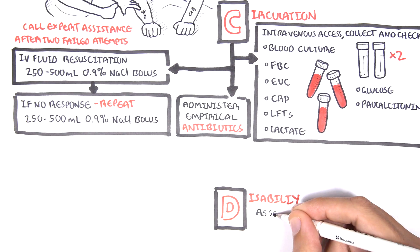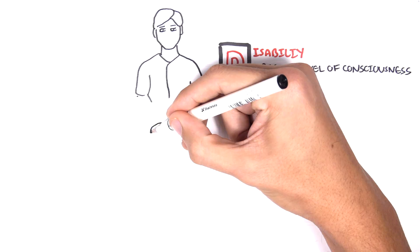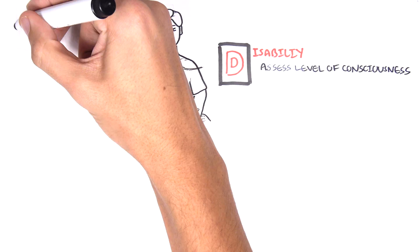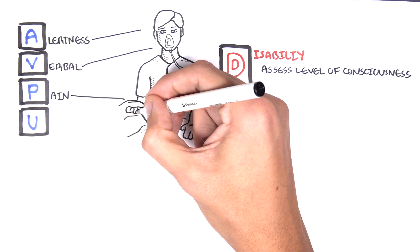D is for disability. This is to quickly assess consciousness. A quick way to do so is by doing AVPU, which looks at alertness, verbal response, pain, and unresponsiveness.